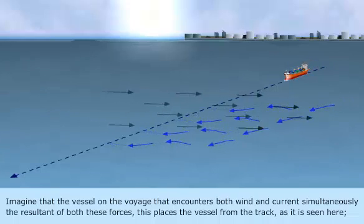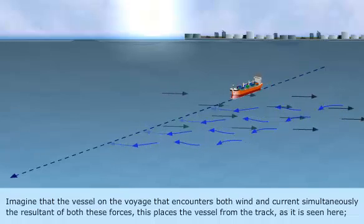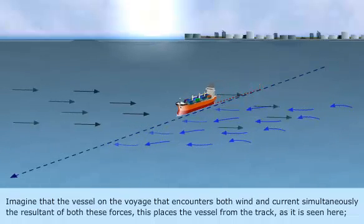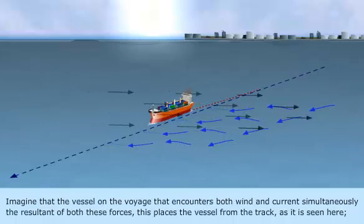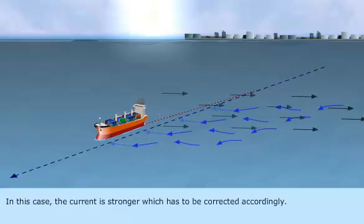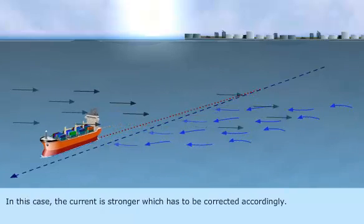Imagine the vessel on a voyage that encounters both wind and current simultaneously. The resultant of both these forces displaces the vessel from her track, as it is seen here. The vessel moves according to the stronger force in play. In this case, the current is stronger, which has to be corrected accordingly.